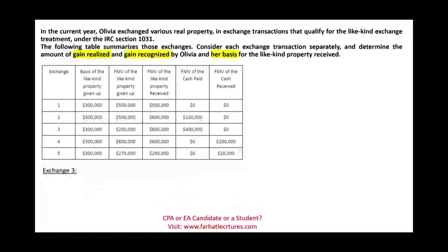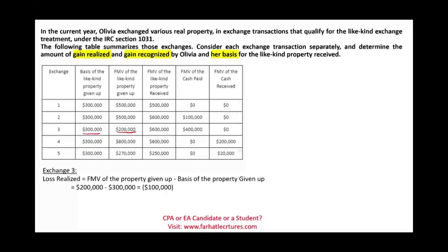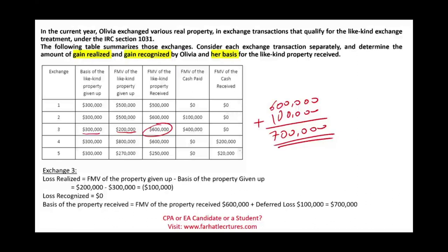Exchange 3: basis is $300,000, fair market value is $200,000 — so if we sold this asset today, we'd have a loss of $100,000. What do we do with losses? The IRS doesn't allow you to record the loss, so losses are always deferred — no loss is recognized. To find the basis, we take the fair market value of the asset received, $600,000, and add the deferred loss, giving us a basis of $700,000 in the new property. Our basis is now higher, so when we sell, our gain is lower.